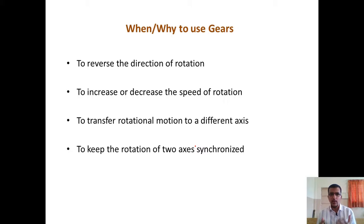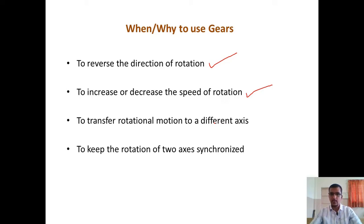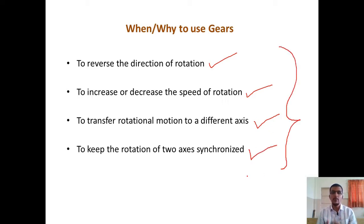Why and when do we use gears? We use gears whenever we need to reverse the direction of rotation, or whenever we want an increase or decrease in rotational speed — which alternately gives an increase or decrease in torque. We also use gears to transfer rotational motion to a different axis — for example, transferring power from a horizontal axis to a vertical axis — or to keep the rotation of two axes synchronized. These are the four prime reasons to use a gear.